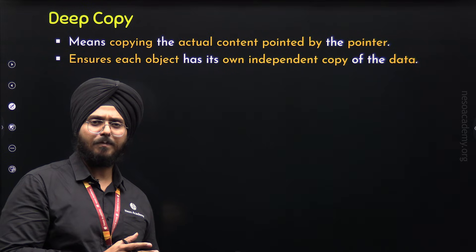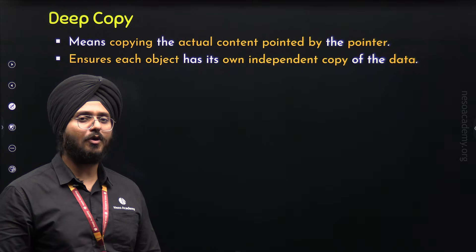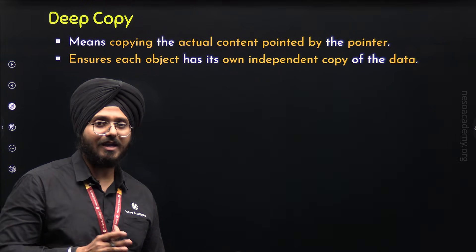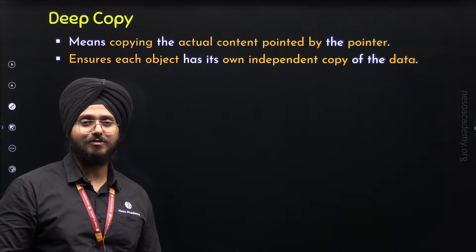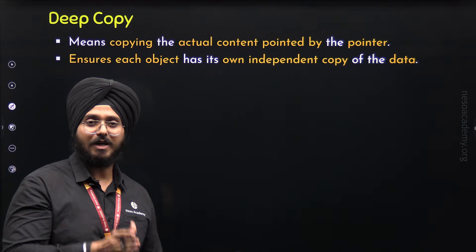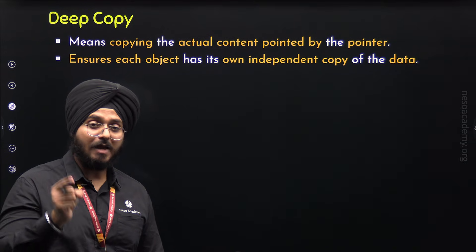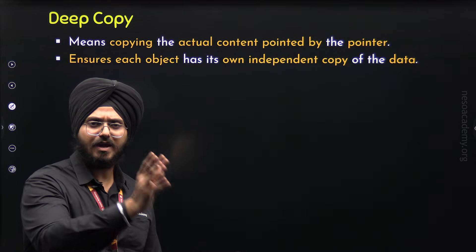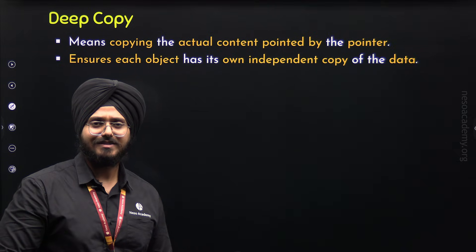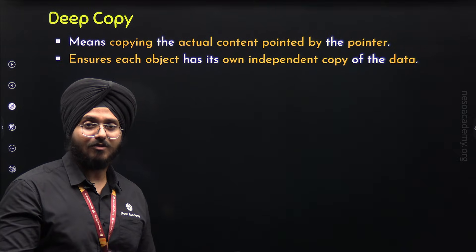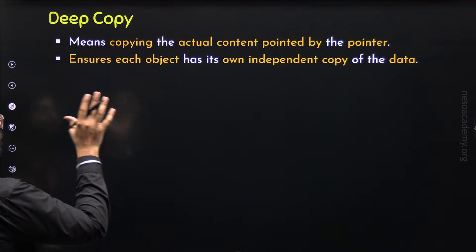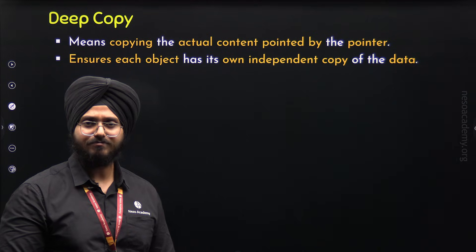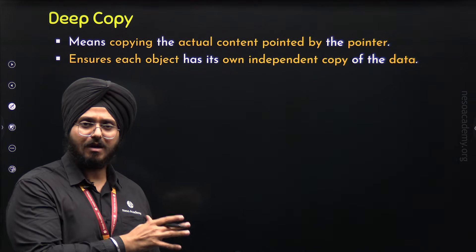In case of Deep Copy, we copy the actual content pointed by the pointer. Due to this reason, pointers do not point to the same memory location — they point to different memory locations. If we make any change via one object to a specific memory location, it will not be reflected in the other object. And due to this reason, objects have independent copies of the data. If it is not clear, then with the help of an example, it will be completely clear to you.